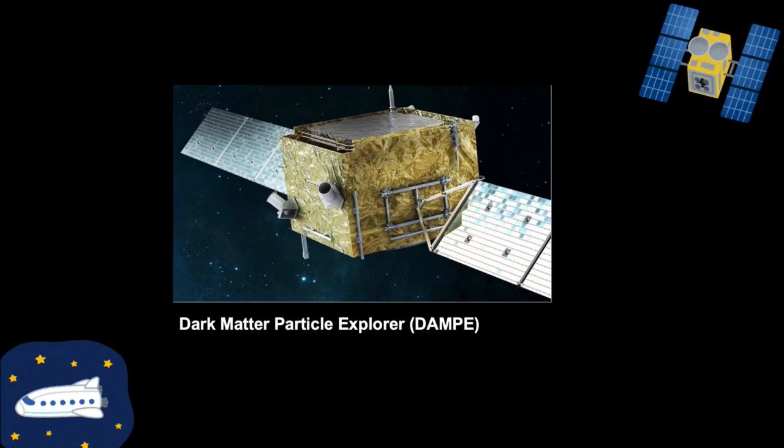DAMPE is a space telescope that detects high-energy gamma rays, electrons, and cosmic rays to try to identify dark matter signatures.